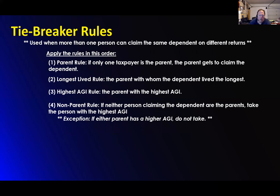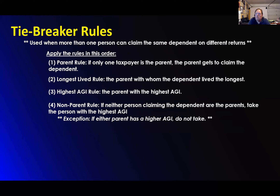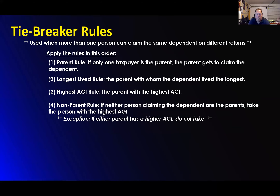Now for the tiebreaker rules — these rules are a pain in the butt. In all the years I've been doing this, I've had to use tiebreaker rules four times, and they are a royal pain because everybody wants to claim the child. The tiebreaker rules are used when one person can claim the same dependent on different returns — basically two parents trying to claim a child.